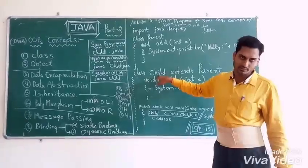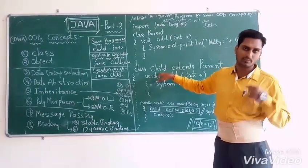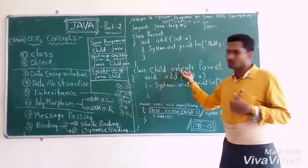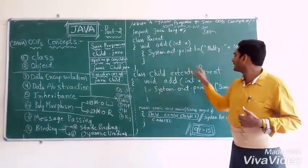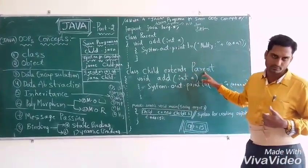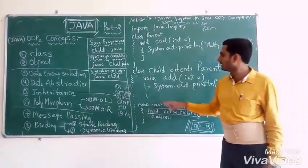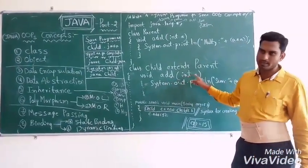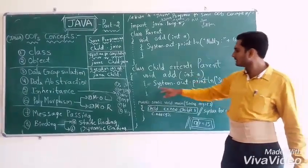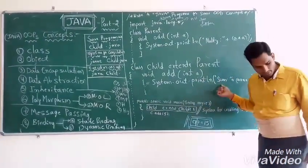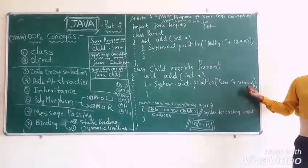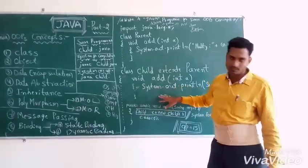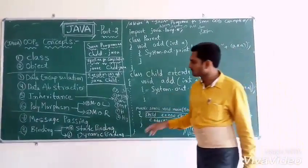Class Child is a user-defined class — C is capital. The extends keyword is used to do inheritance from class Parent. Inside class Child, add is again a user-defined method with int A, and System.out.println prints the sum. There are two classes; one class extends the other, so this comes under inheritance.